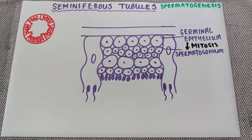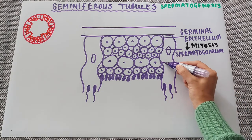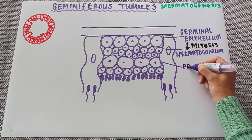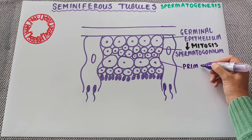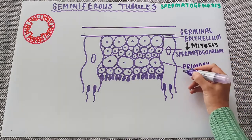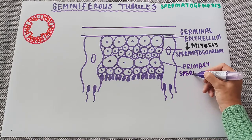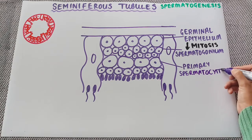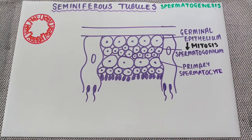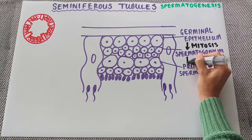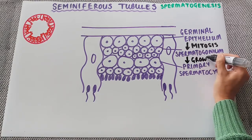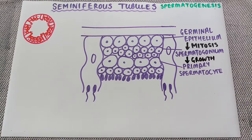Following that, the spermatogonium starts to grow into these bigger cells here, which are the primary spermatocytes. There's no division here — this is just going from a smaller spermatogonium to a larger primary spermatocyte.